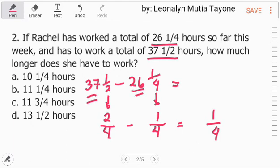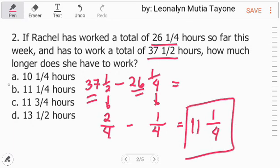Ngayon, mag-deduct tayo sa mga whole numbers. 37 minus 26 and that is 11. So, ang sagot dito ay 11 and 1 fourth. Letter B.